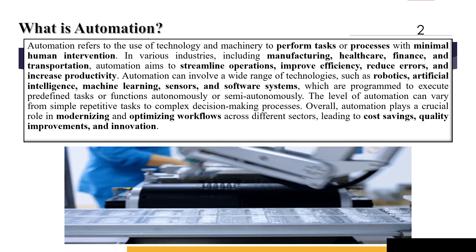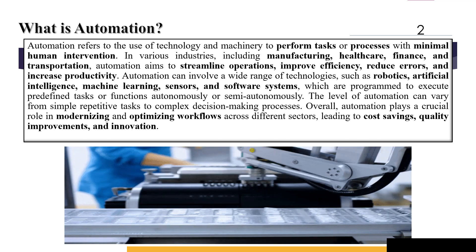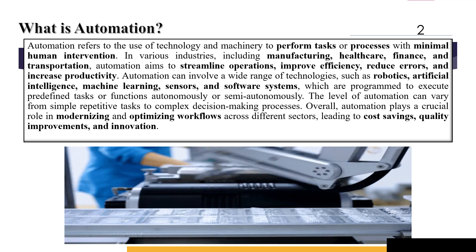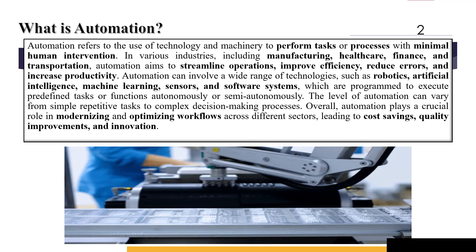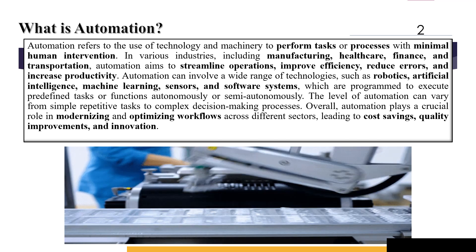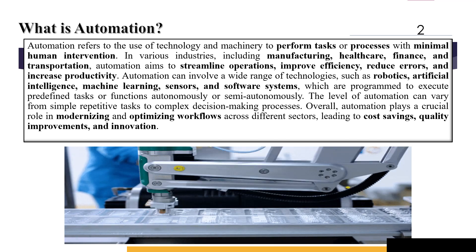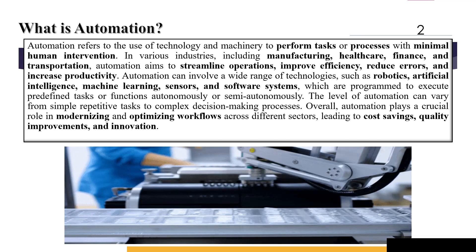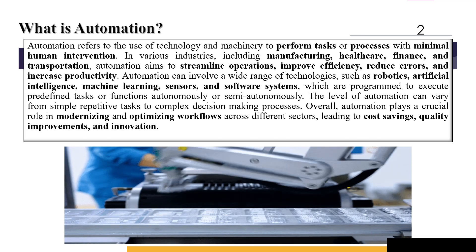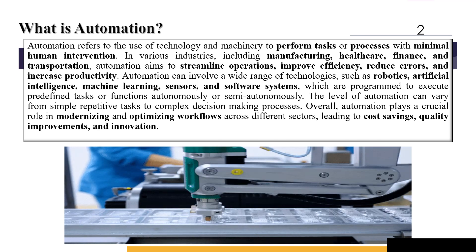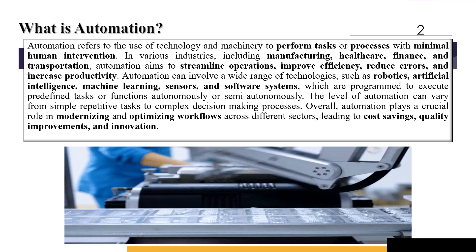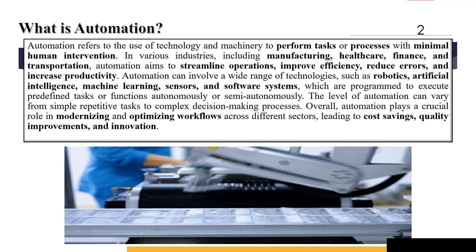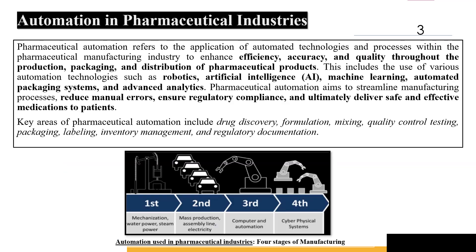Automation can actually include a wide range of technologies, for example robotics, artificial intelligence, machine learning, sensors, and software systems. Overall, automation basically plays a crucial role in modernizing and optimizing workflow across various sectors, leading to cost savings, quality improvements, and innovation.